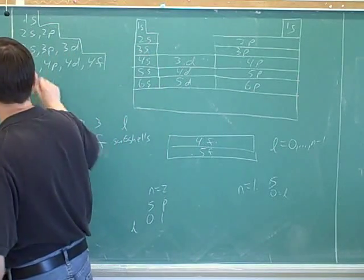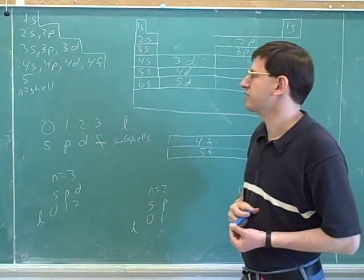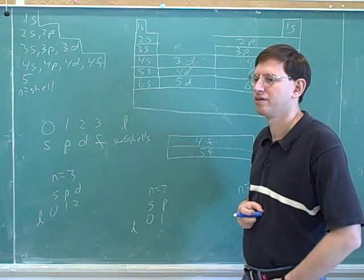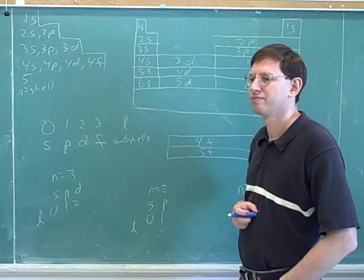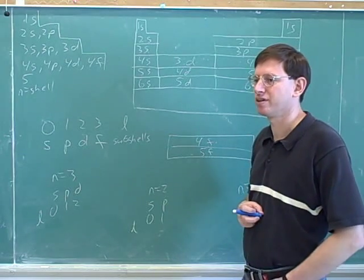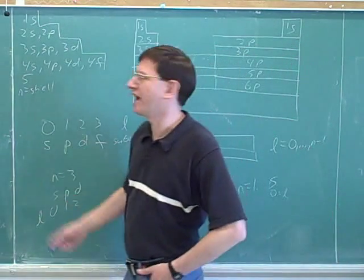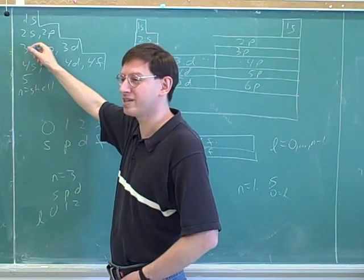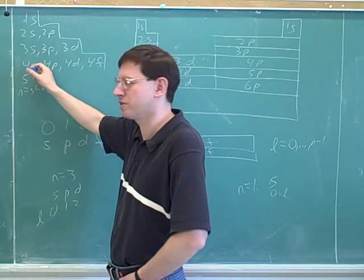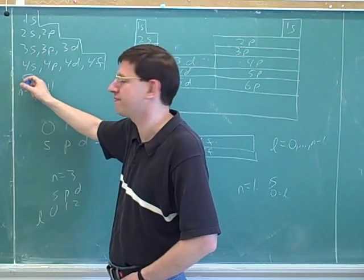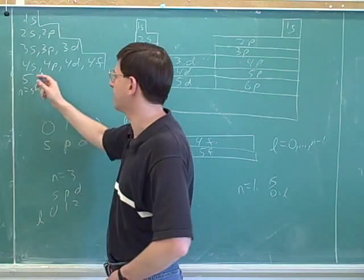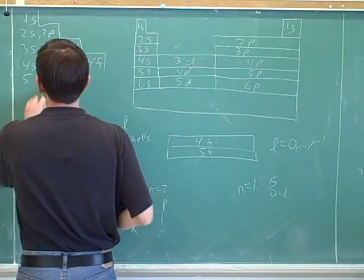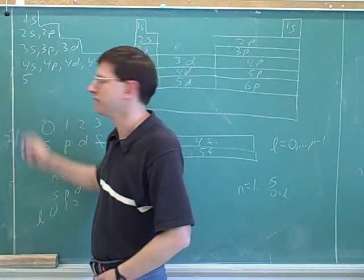How about the fifth shell — how many subshells does it have? Notice the pattern: the first shell has one subshell, the second has two, the third has three, the fourth has four, so the fifth shell should have five subshells. What would the L numbers be? They go from zero to four — even though there are five of them.